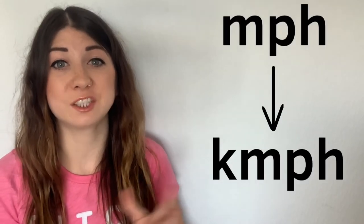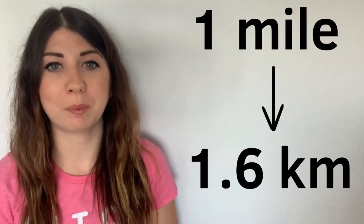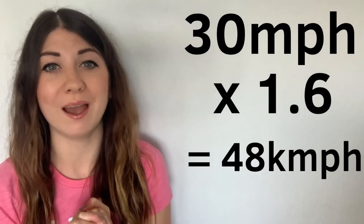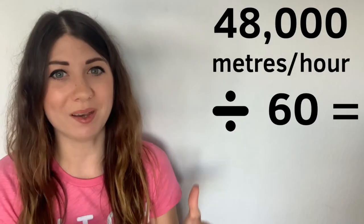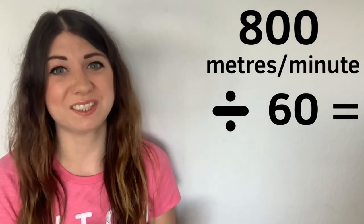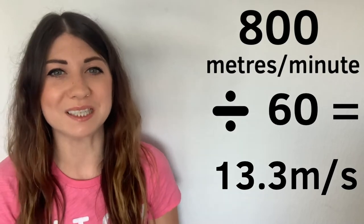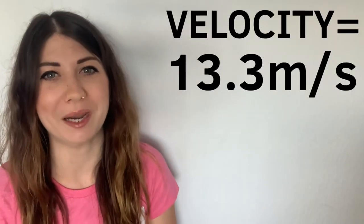To start the conversion let's turn miles per hour into kilometers per hour. There's 1.6 kilometers in a mile so we multiply 30 miles per hour by 1.6 to give us 48 kilometers per hour. This is 48,000 meters per hour, so then we divide it by 60 to get meters per minute and by 60 again to get meters per second which gives us 13.3 meters per second. Because the car is traveling in a straight line this means it has a velocity of 13.3 meters per second.